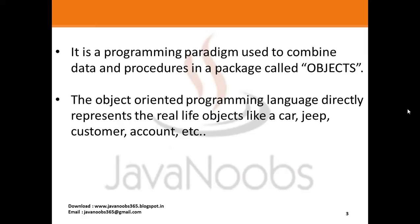Object-oriented programming is a programming paradigm which is used to combine data and procedures in a package called an object. In every program you have data and procedures. Data is nothing but the fields of the forms which you fill in, and a procedure is nothing but the method. Without these, programming becomes a very hectic and tough task. Any programming language or code must contain data and procedures together, and all of these put together interact with something called objects.